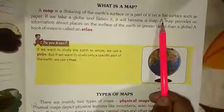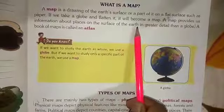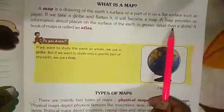2. How is a map useful? Here is the answer. Page number 55. A map provides us information about places on the surface of the earth in greater detail than a globe.